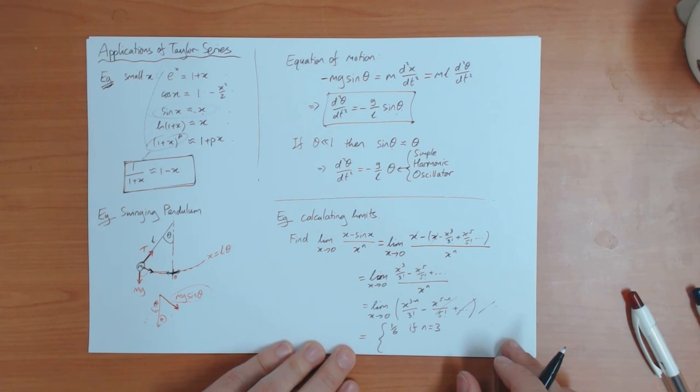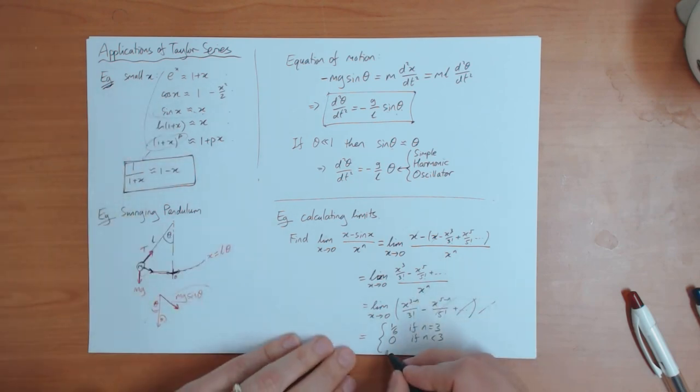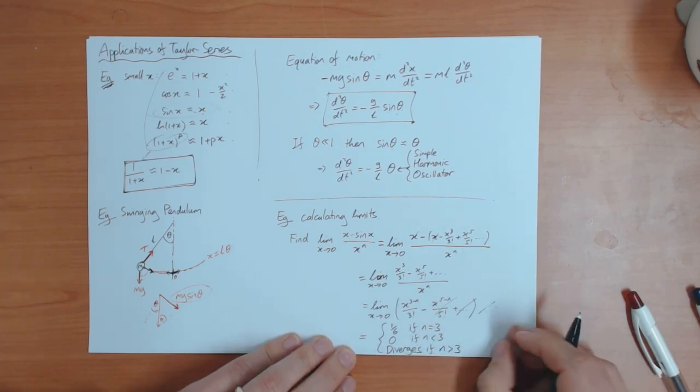Now if n is less than 3, so I get something positive here, then this also goes to zero. And all of these terms go to zero. So I get zero if n is less than 3. Now if n is greater than 3, then this is like x to the minus 1, x to the minus 2, and so on. This will diverge. In other words, it will go to plus and minus infinity. So it diverges if n is greater than 3.